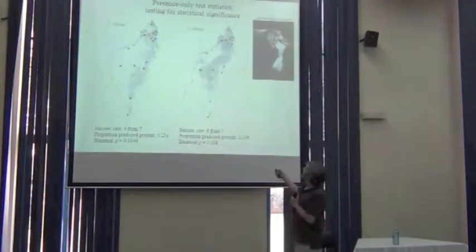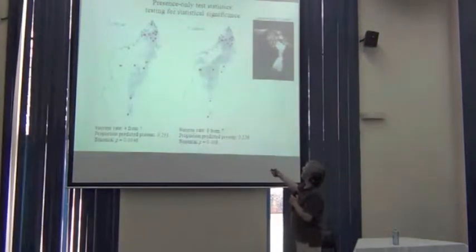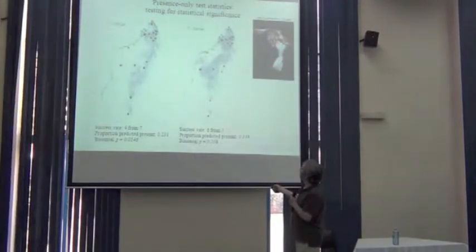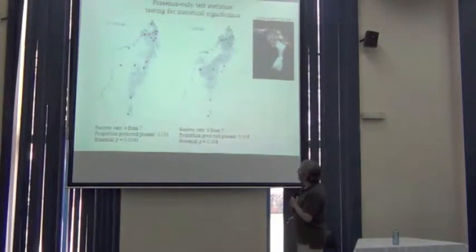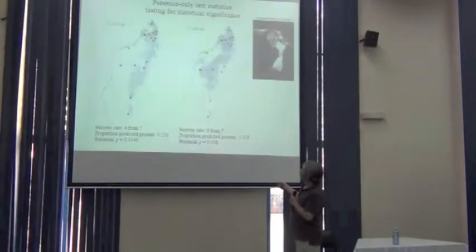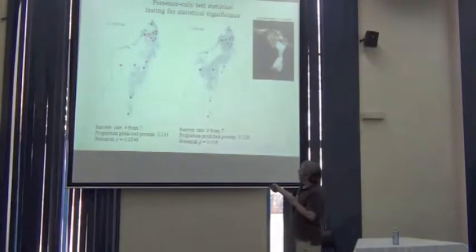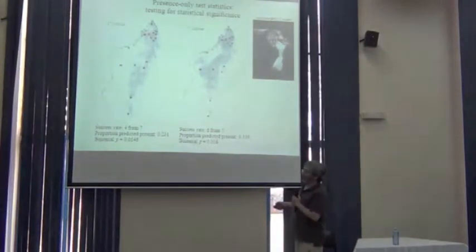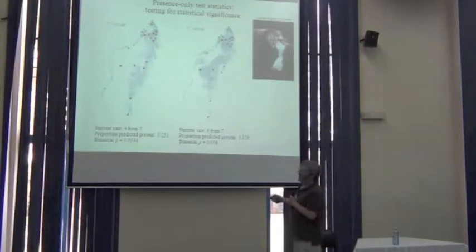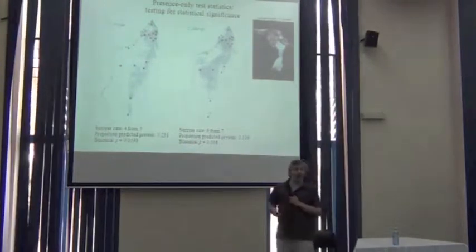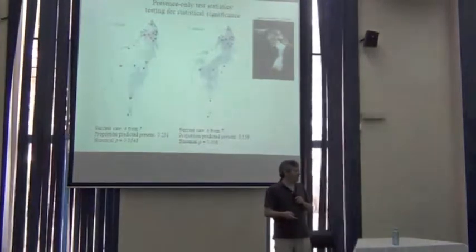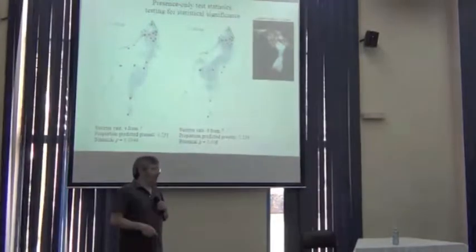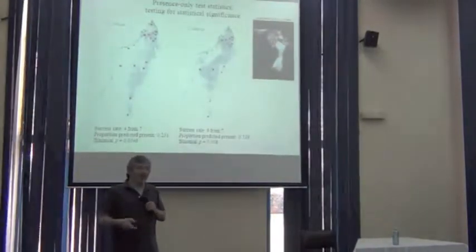Here's a different example, different species, or actually it looks like a different model, trained with a different set of those same points and tested with the red points. It looks like the success rate was six out of seven. Here the model is a bit broader, 34% instead of 23%. But the success rate was better. And so we see a binomial probability of getting six out of seven correct with an underlying probability of 34%, and that probability is now very statistically significant. So this is a very simple model evaluation approach, and it's quite excellent.